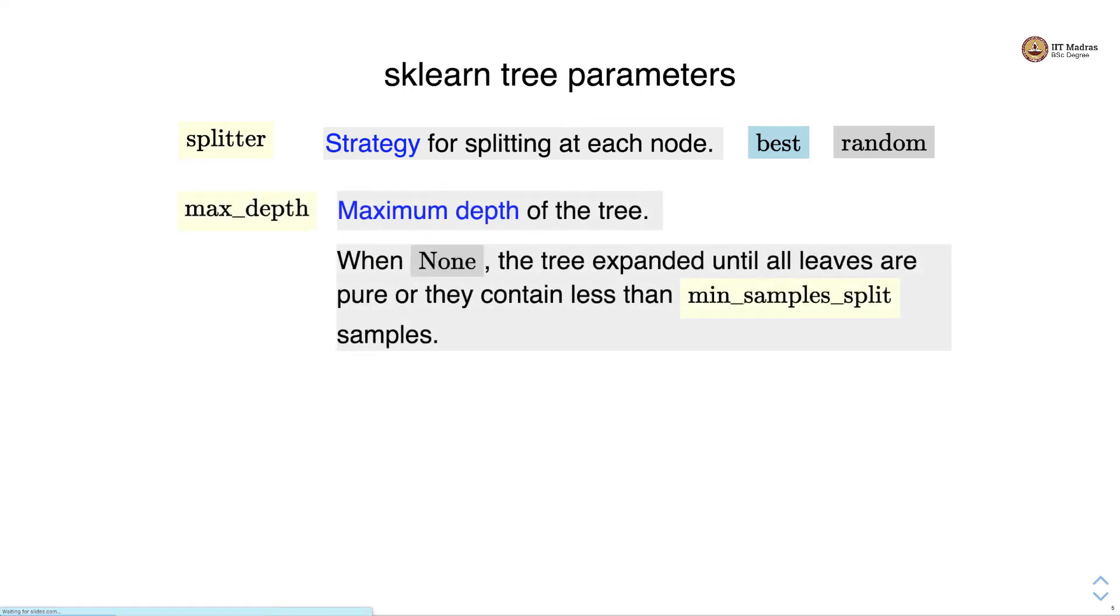Then there is max_depth which specifies the maximum depth of the tree. When none is specified by default, the tree is expanded until all leaves are pure or they contain less than min_samples_split samples. In max_depth we can also specify an integer value.